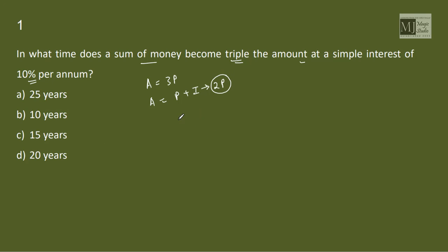So we know the formula for interest: Interest equals P into R into T by 100. So R is 10%, so 200 by 10 equals T. T is 20 years. In 20 years sum of money tripled itself at a simple interest of 10% per annum. Option D.